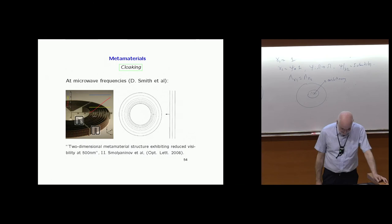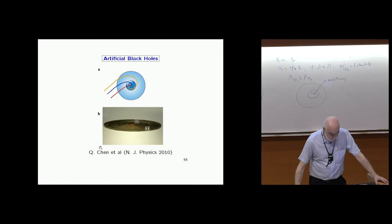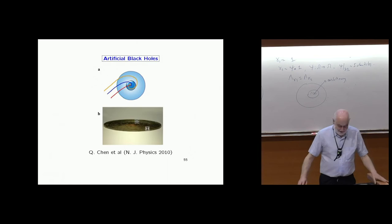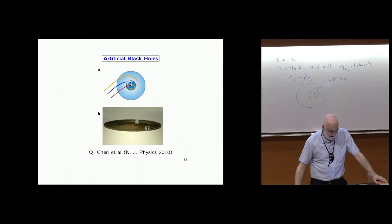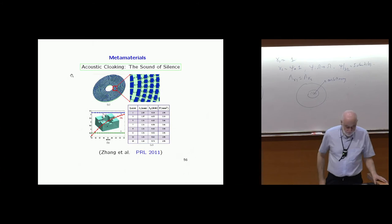The first microwave experiment cloaked a 12-centimeter copper cylinder. Optical black holes — the opposite of cloaking, where light is trapped — have also been built artificially. This was done by Chinese authors, and several other groups have done laboratory experiments on black holes for light.